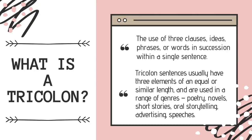Tricolon often uses three clauses, ideas, phrases, or words in succession within a single sentence. So anything where you see something bunched in threes within a sentence is usually a tricolon. The three elements are usually of equal or similar length, and they can be found in a range of different genres — poetry, creative writing, short stories. It's also quite popular in speeches and oral storytelling, and it can be used for both persuasive purposes as well as enhancing description.